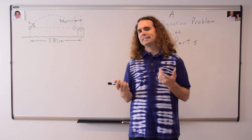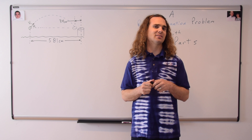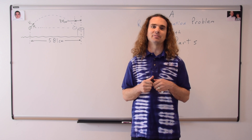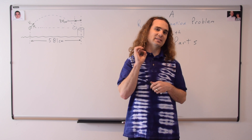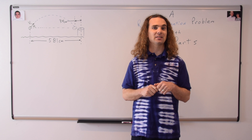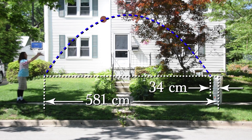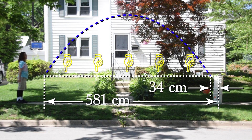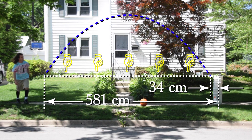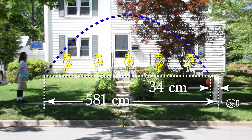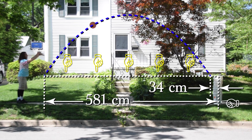We obviously need to use the range equation. Why should we use the range equation? It's in the title of the video. Well, on a quiz or test it won't be in the title of the video. So I need to know what is it about this problem that specifically says you can use the range equation? Because the ball is released from the same height as the top of the bucket, the displacement of the ball in the y direction is zero. Therefore, the displacement in the x direction is the range of the projectile, and we can use the range equation.